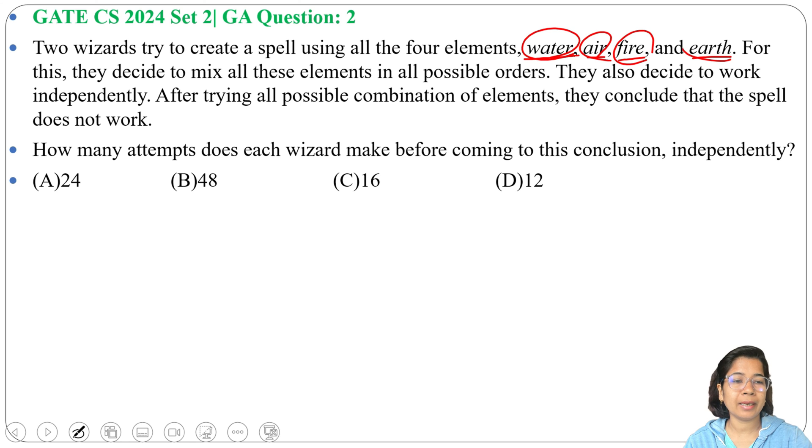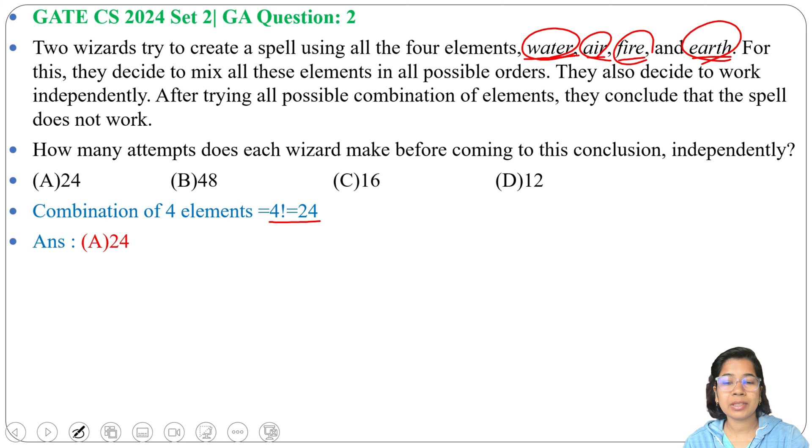fire, and earth. So 4 factorial combinations. 4 factorial is 24. That's why the answer will be 24. 24 attempts does